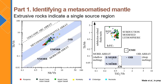When we look at the extrusive rocks — the basalts from the Gawler Range Volcanics — we see that they mostly correspond to a singular source region within the metasomatised mantle array or the subduction-modified lithosphere. This highlights the importance of using both the intrusive and the extrusive component to look at the different mantle sources within this large igneous province. If we just focused on the basaltic component, we would have missed the heterogeneity seen within the Hildibus Suite.